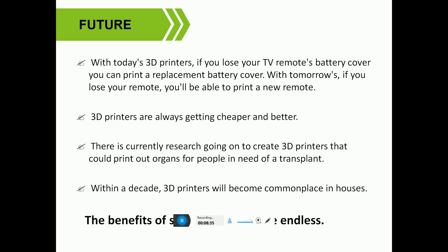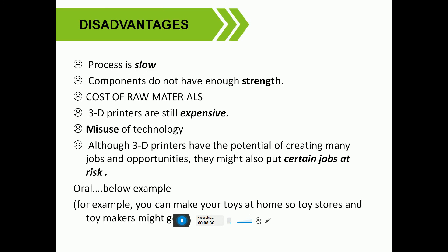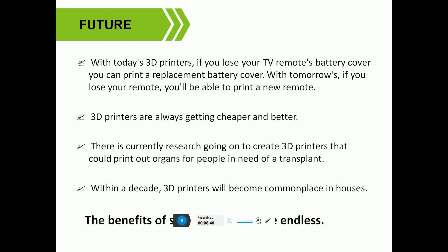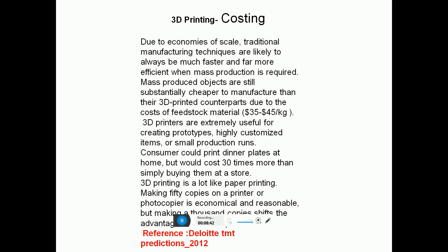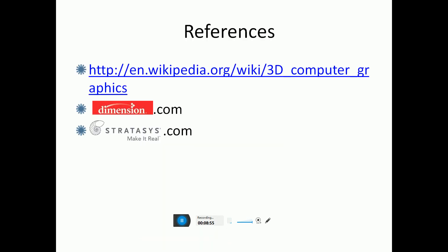The benefits of 3D printers outweigh the disadvantages. Regarding 3D print costing: this 3D printer is suitable and cheaper to manufacture than alternatives. The feeding material costs $35 to $45 per kilogram. Additional information is available via the Wikipedia page on 3D printing.